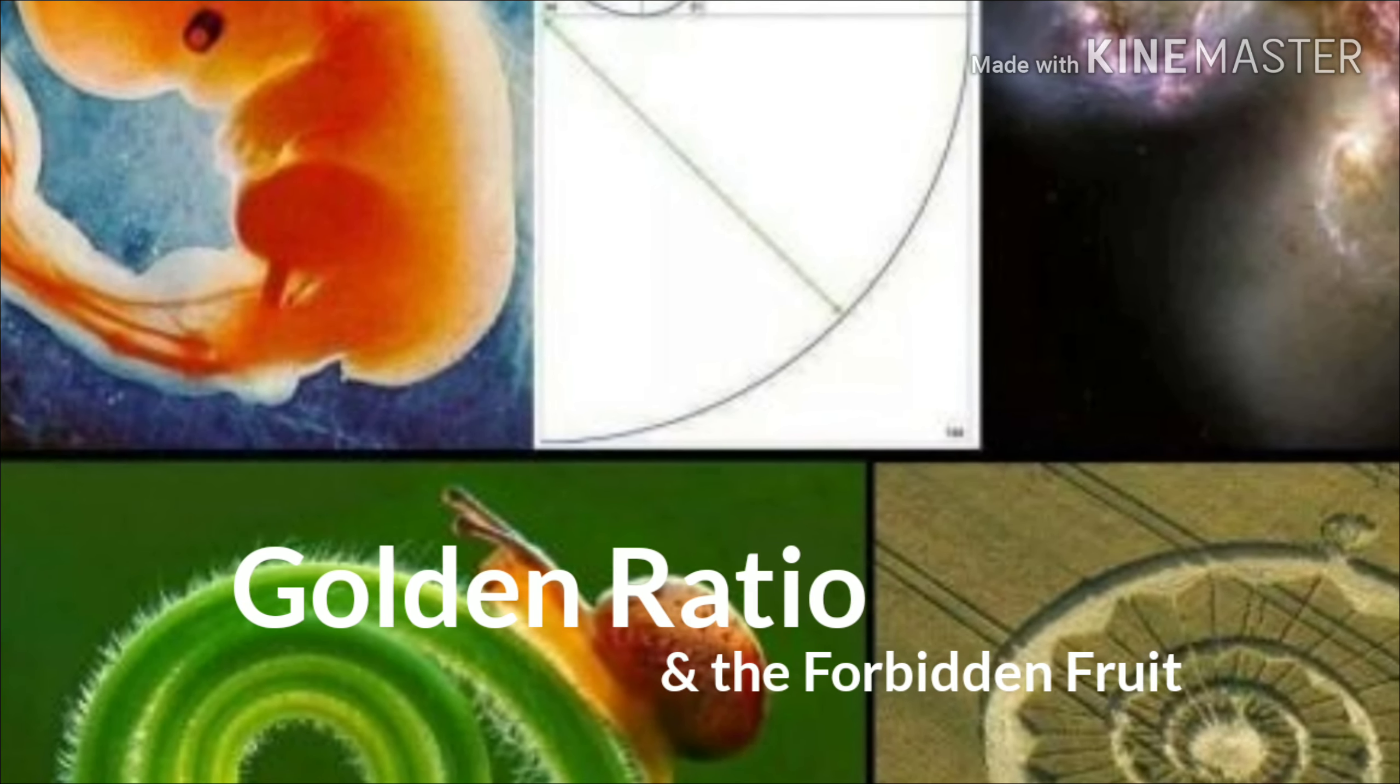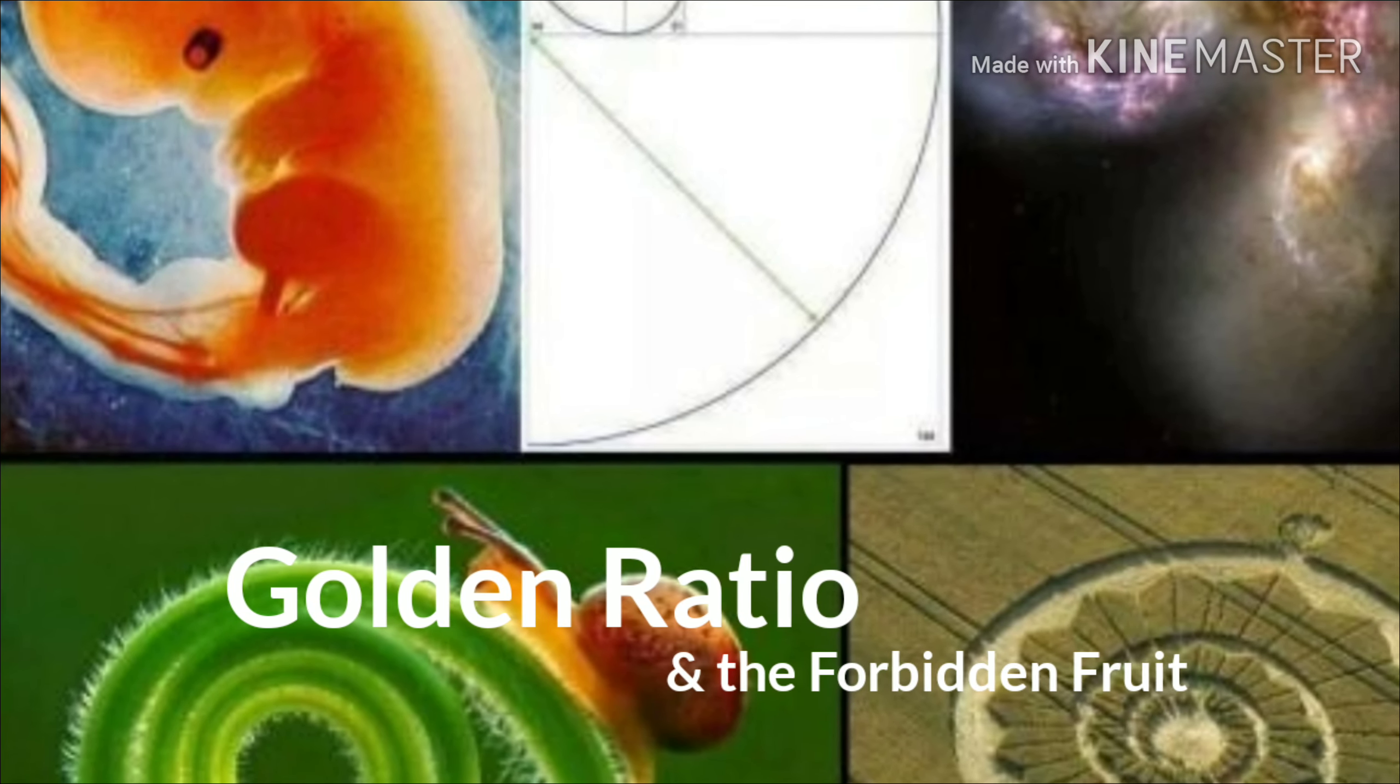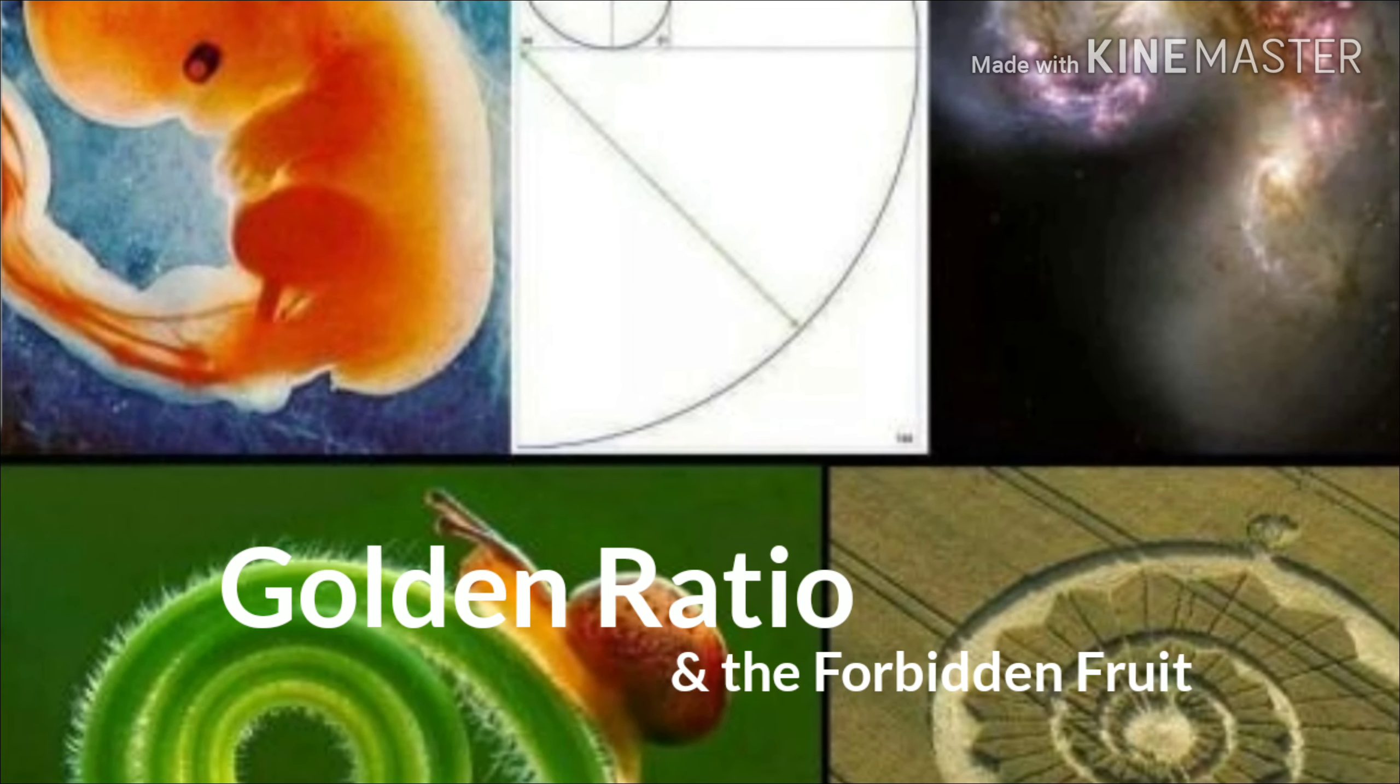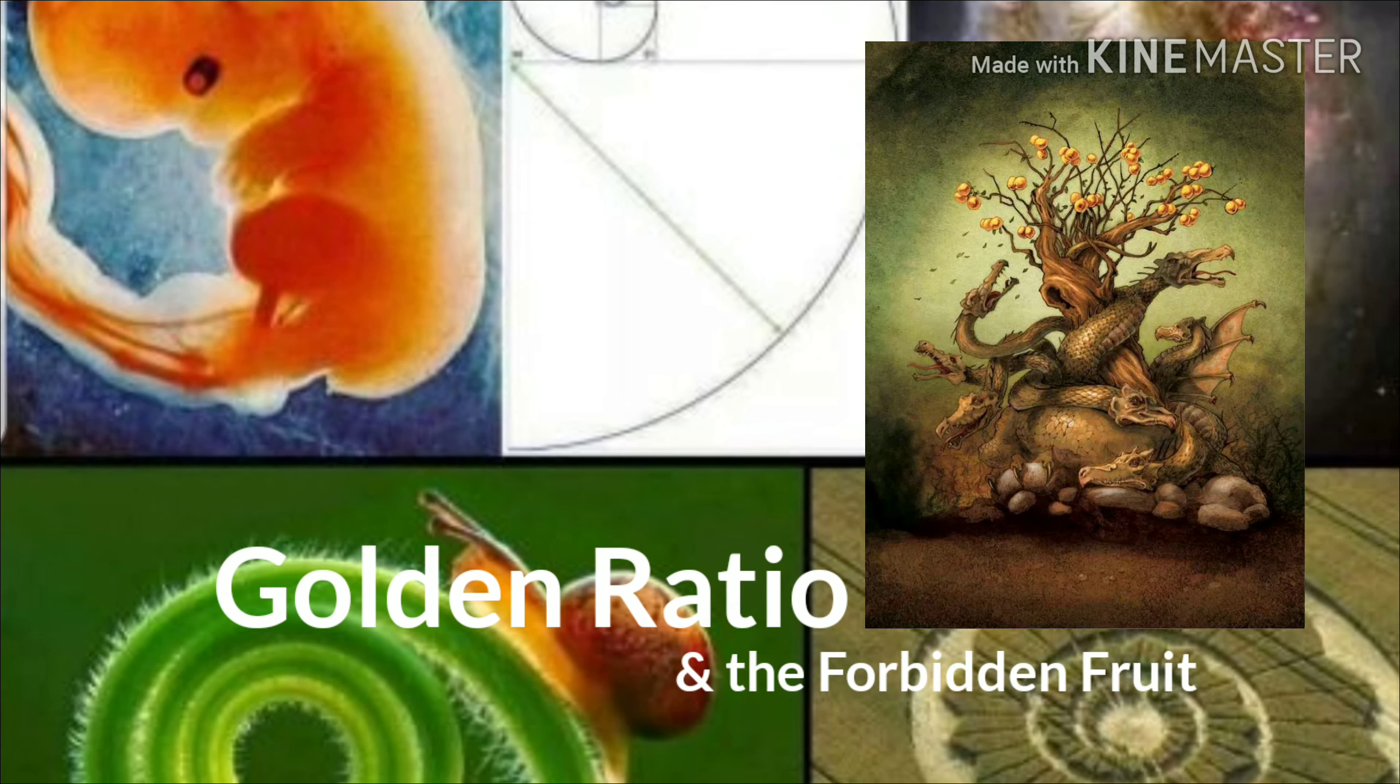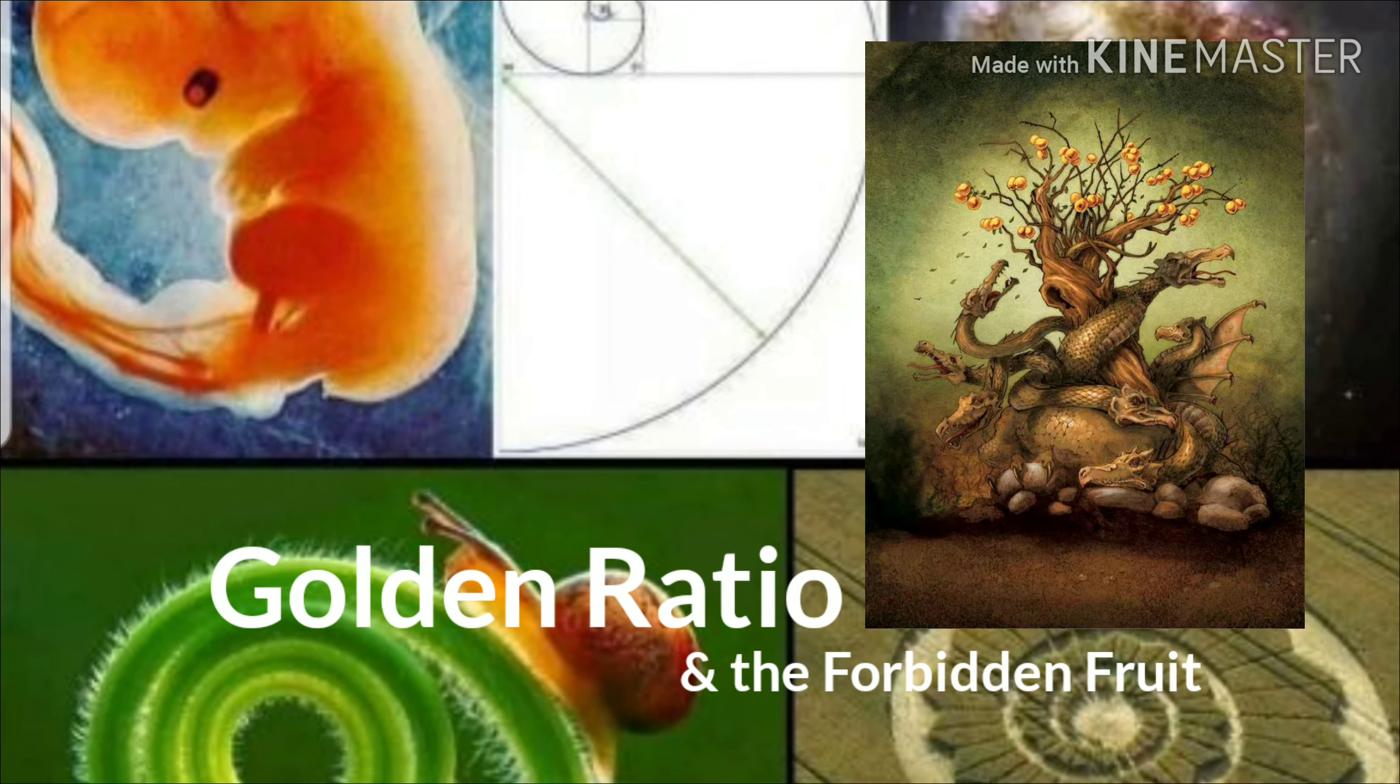Everything in this world, from our physical bodies to seashells, is based off a phenomenon called golden ratio. This is a symmetrical pattern to all creation. It's depicted in the Torah as the fruit and the golden apple in some mythologies.